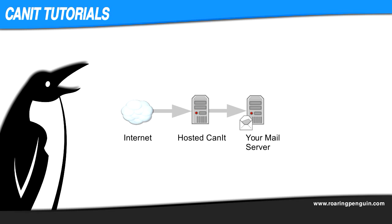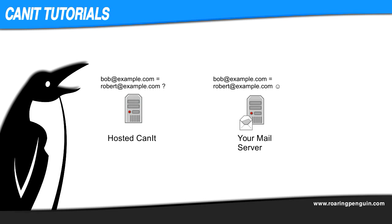Suppose mail comes in for two recipients: robert.example.com and bob.example.com. Your back-end server may know that those two addresses are really aliases for the same user, but Hosted Canet has no way to know that. It can't assume that Robert and Bob refer to the same person, so it counts them as two separate addresses.